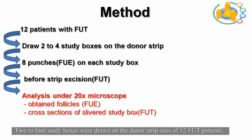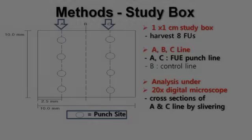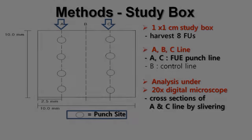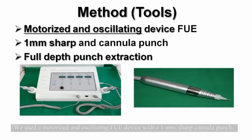Two to four study boxes were drawn on the donor strip sites of 12 FUT patients. Each study box was one centimeter by one centimeter, and its horizontal width was divided at an interval of 0.25 centimeters, marked by three vertical lines: A, B, and C. A total of eight FUE punches — four each along lines A and C — were made using a motorized and oscillating FUE device with a one millimeter sharp cannula punch.